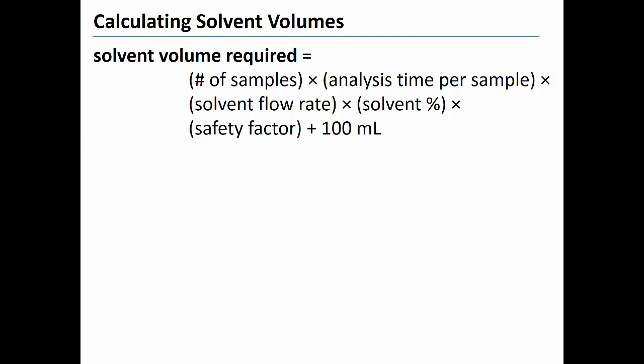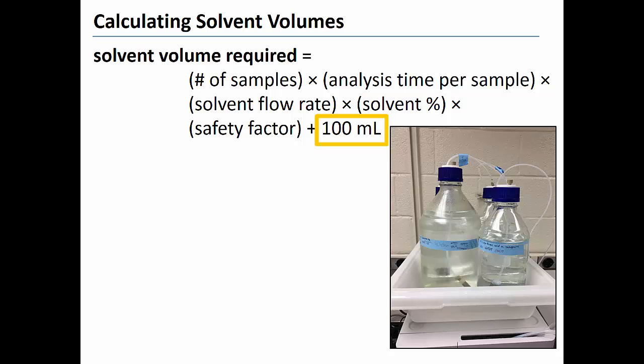You should use this equation to obtain a conservative estimate of the amount of solvent needed to analyze a batch of samples. I recommend a safety factor of 1.2 which corresponds to a 20% excess. This excess accounts for the fact that the pumps are pumping mobile phase in between each sample as well as during the analysis of each sample. I also recommend that you add 100 milliliters of extra solvent to ensure that the solvent levels never fall below the height of the inlet tubes.